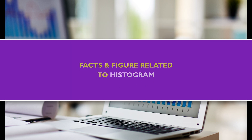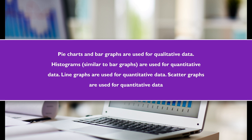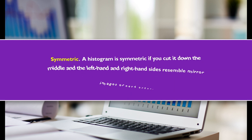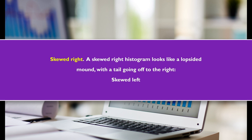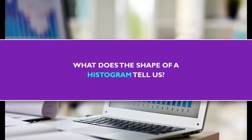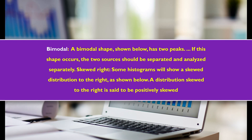Is a histogram qualitative or quantitative? Pie charts and bar diagrams are used for qualitative data, whereas histograms — similar to bar graphs — are used for quantitative data. Line graphs are also used for quantitative data. To interpret the shape of statistical data in a histogram: a symmetric histogram, when cut down the middle, shows the left and right sides resembling mirror images. A skewed right histogram looks like a lopsided mound with a tail going off to the right.